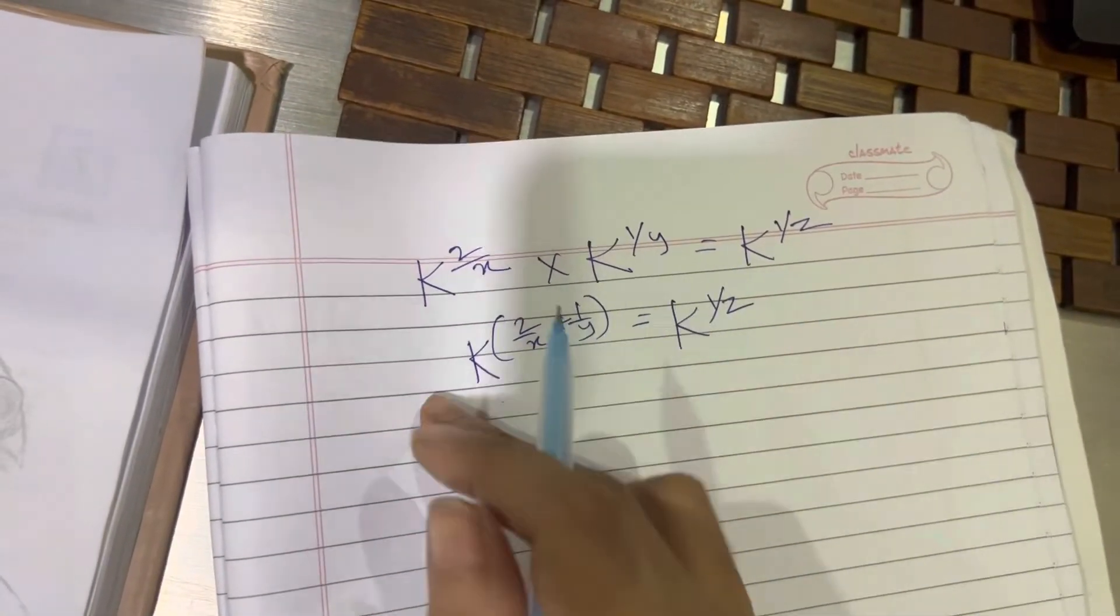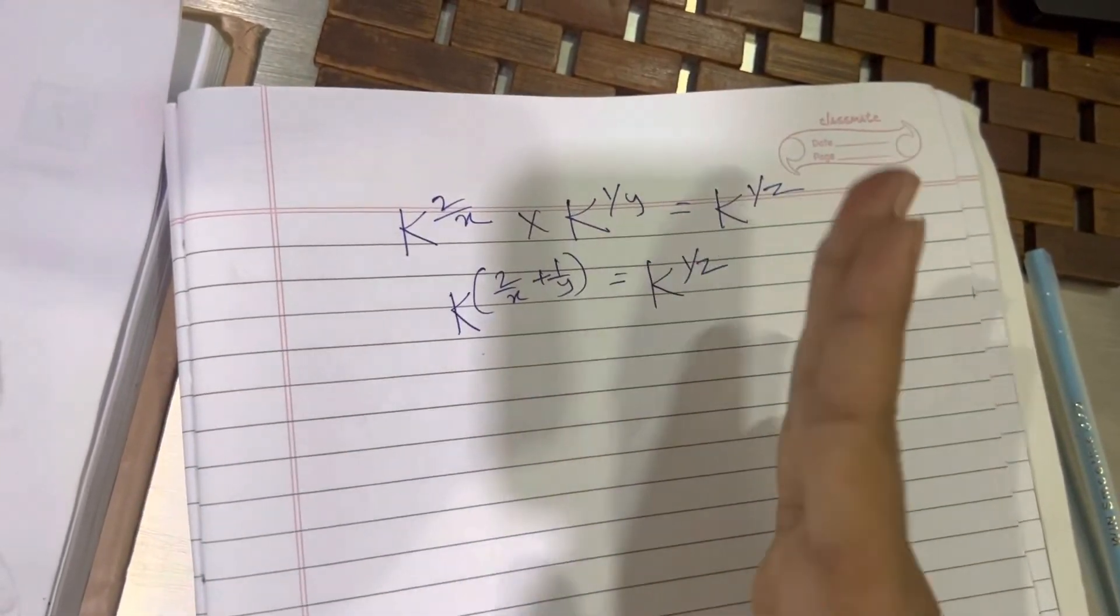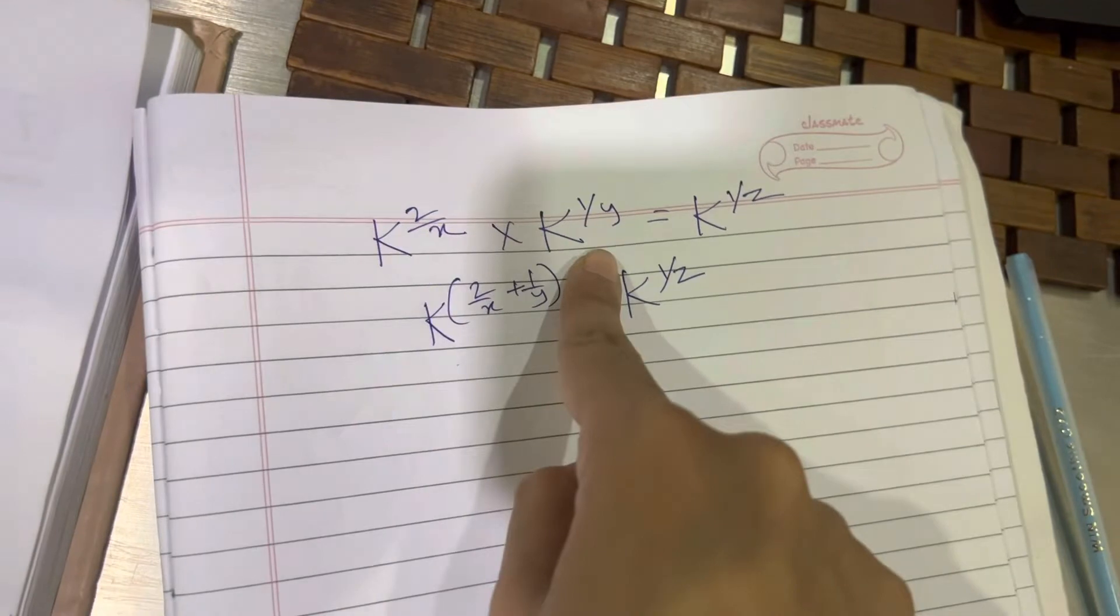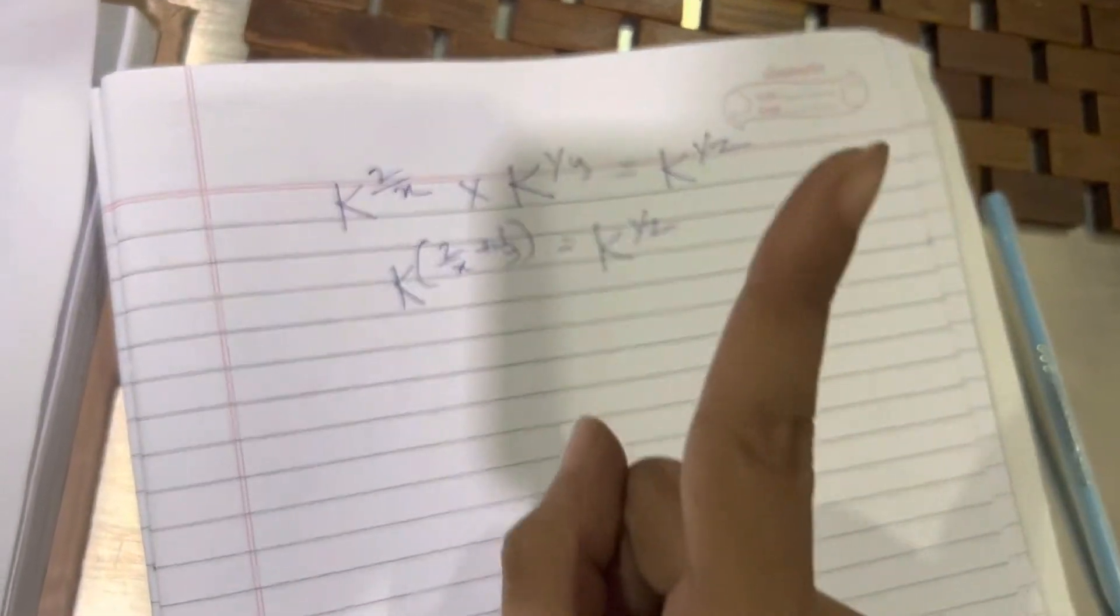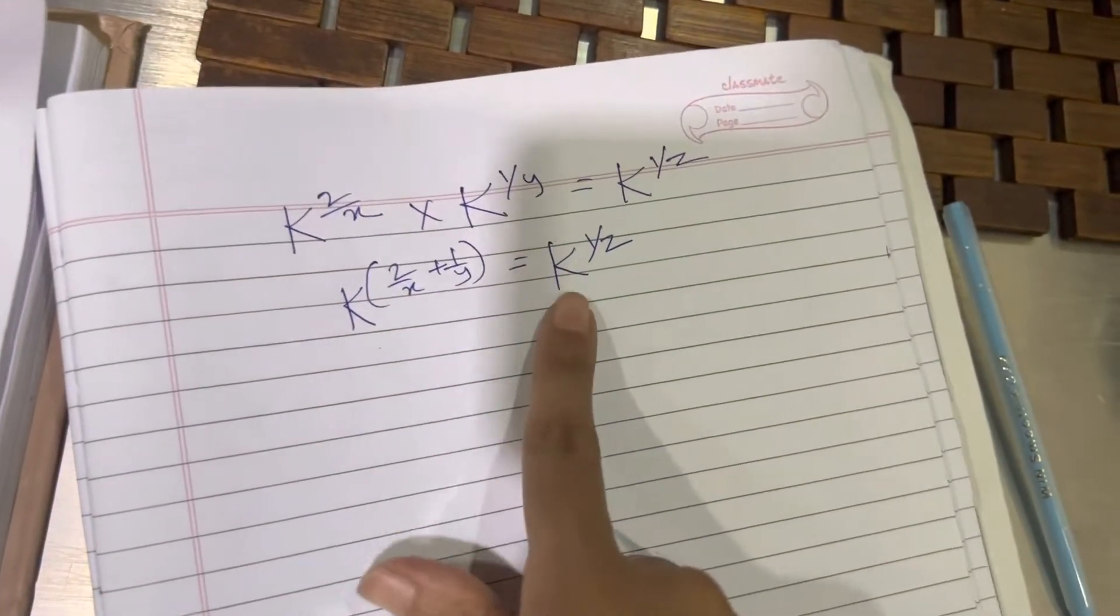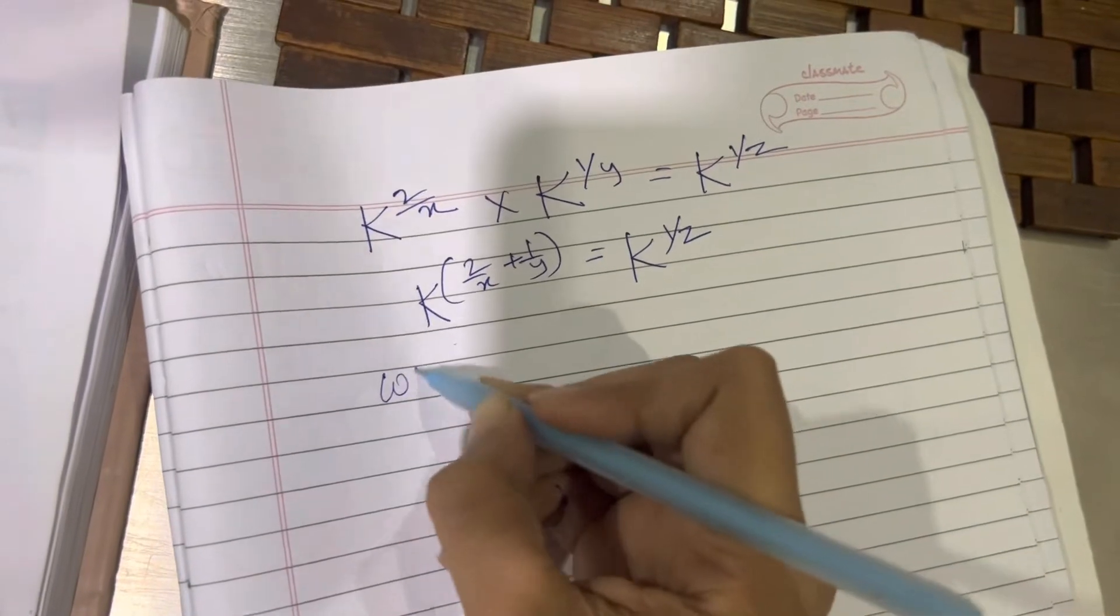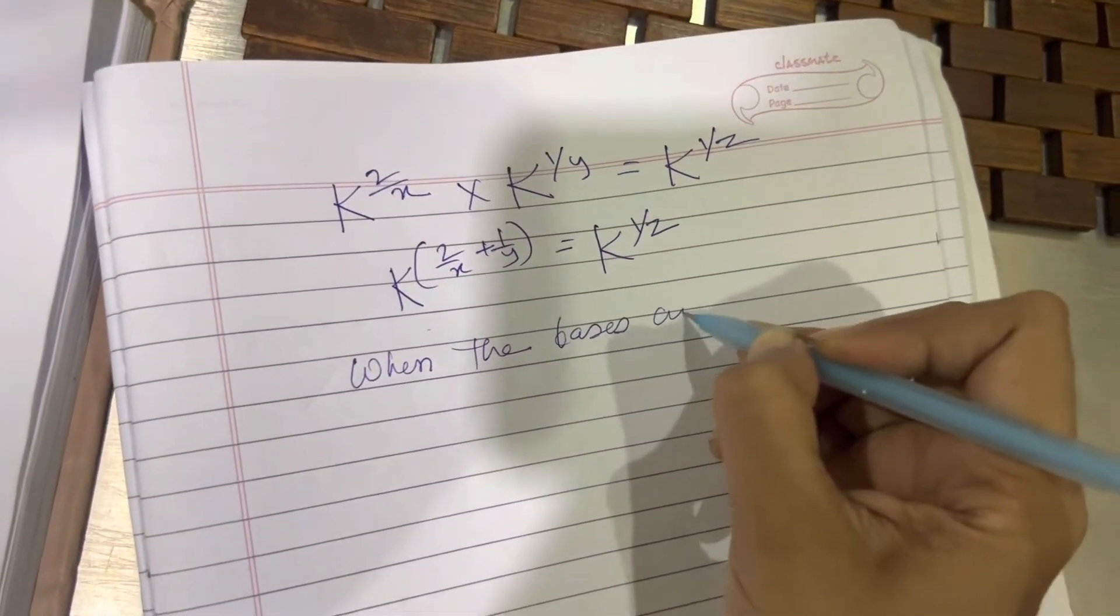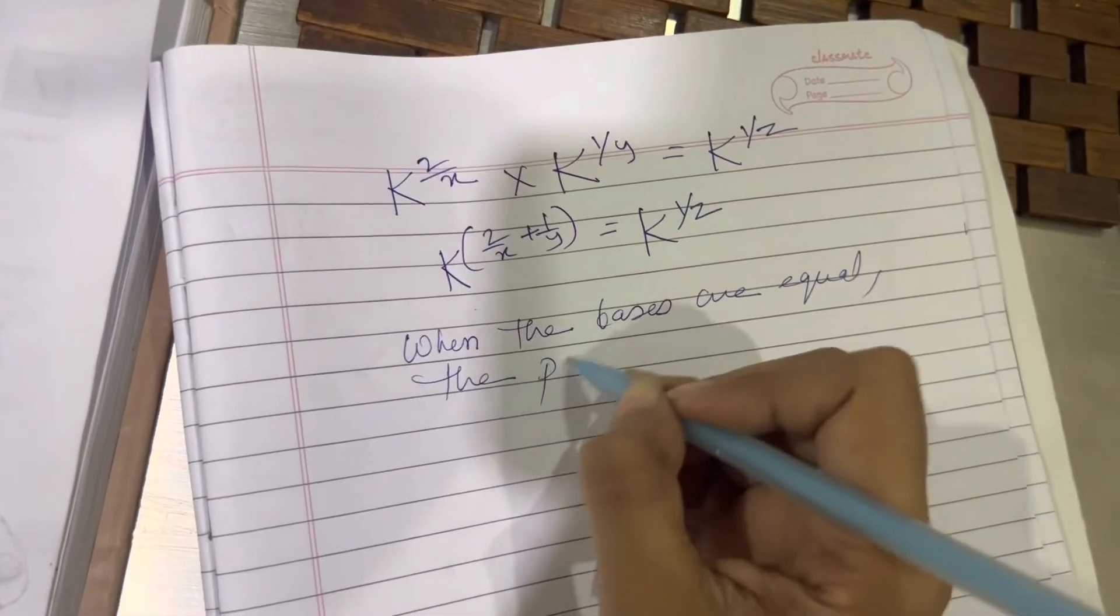Now the bases are equal. And in order to equate the bases, you need to have single bases. Earlier we couldn't have done it because there are 2 bases on this hand side, 1 base on this hand side. Now we have a single k here, single k here. Never cancel like this. Cancel it in your mind and write it. When the bases are equal, the powers are also equal.